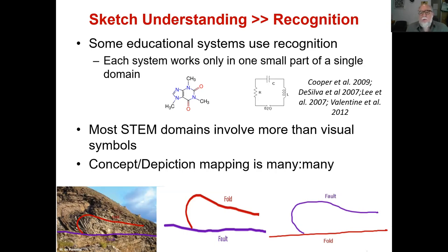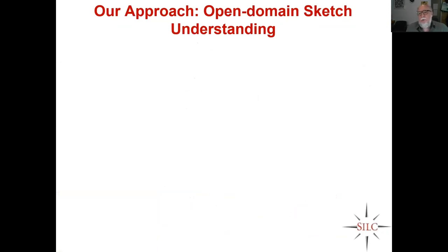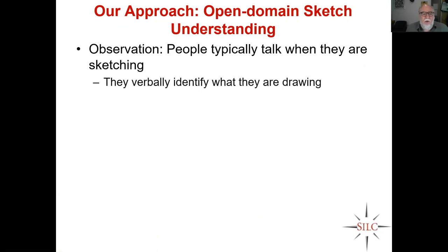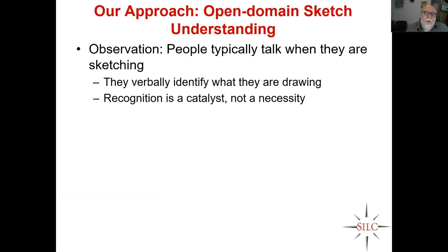That's why what we do is something very, very different. In CogSketch, we do what we call open domain sketch understanding. When you look at people sketching, they talk — they verbally identify what they're drawing. That means recognition isn't a necessity, it's a catalyst — very convenient when you have it, but not something you have to have, because you can simply say what it is you mean.